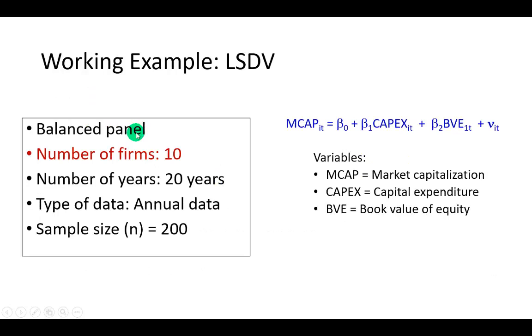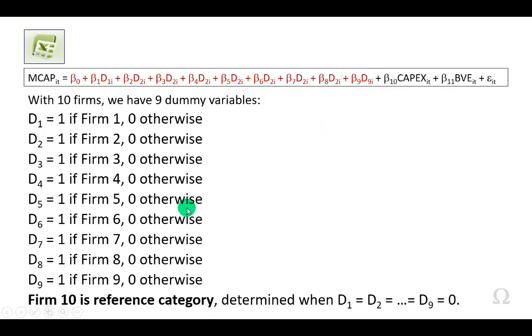Now, for our working example, we're going to regress market capitalization against capital expenditure and book value of equity using a balanced panel data set of 10 firms with 20 years of data for a total of 200 observations. And in this analysis, we're going to have 9 dummy variables because we have 10 firms in total.